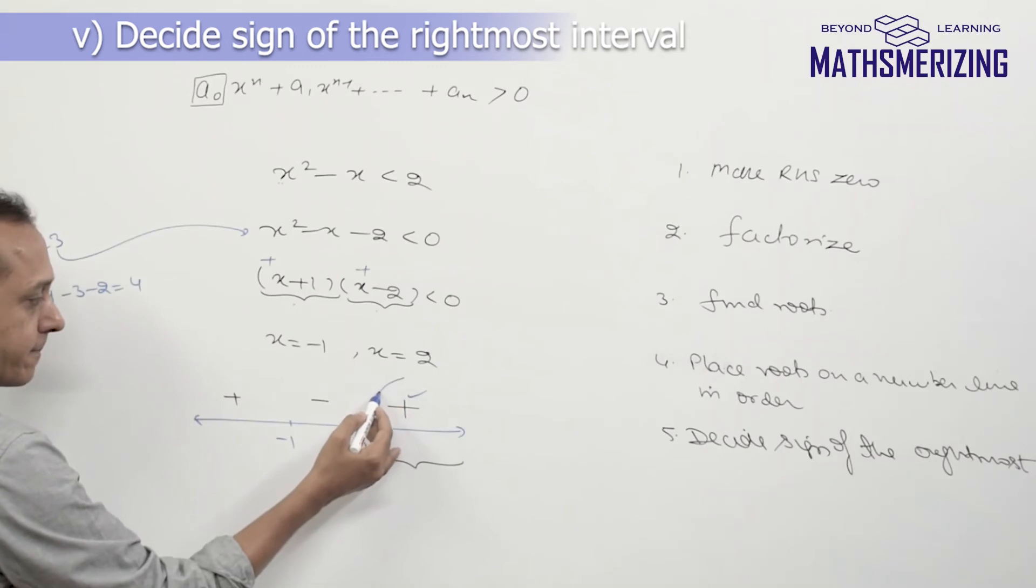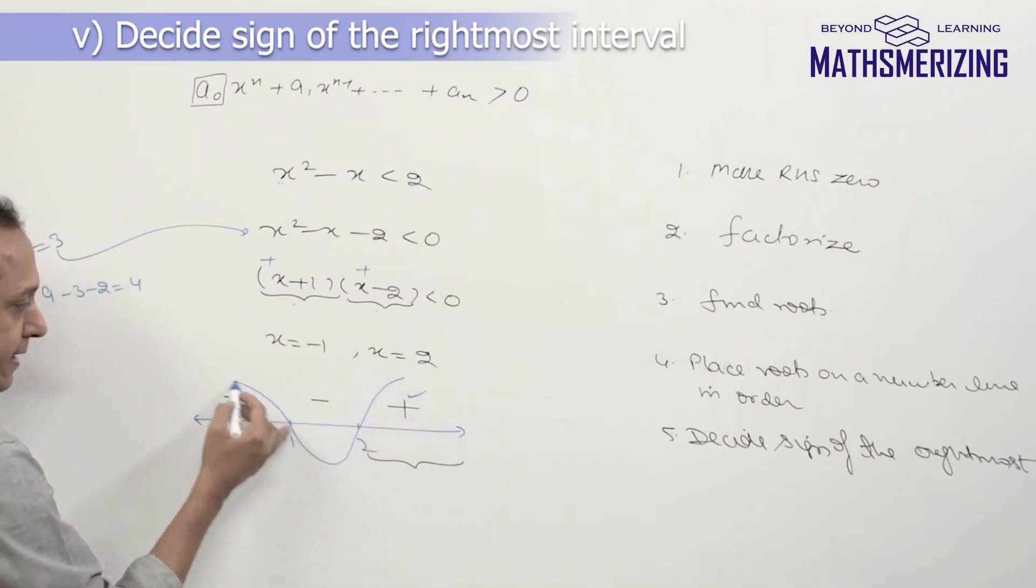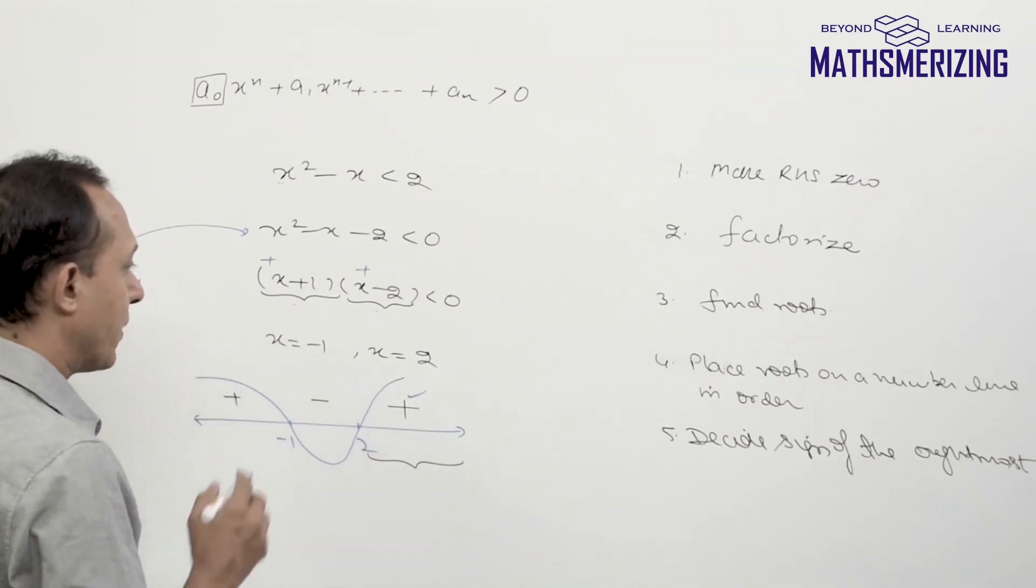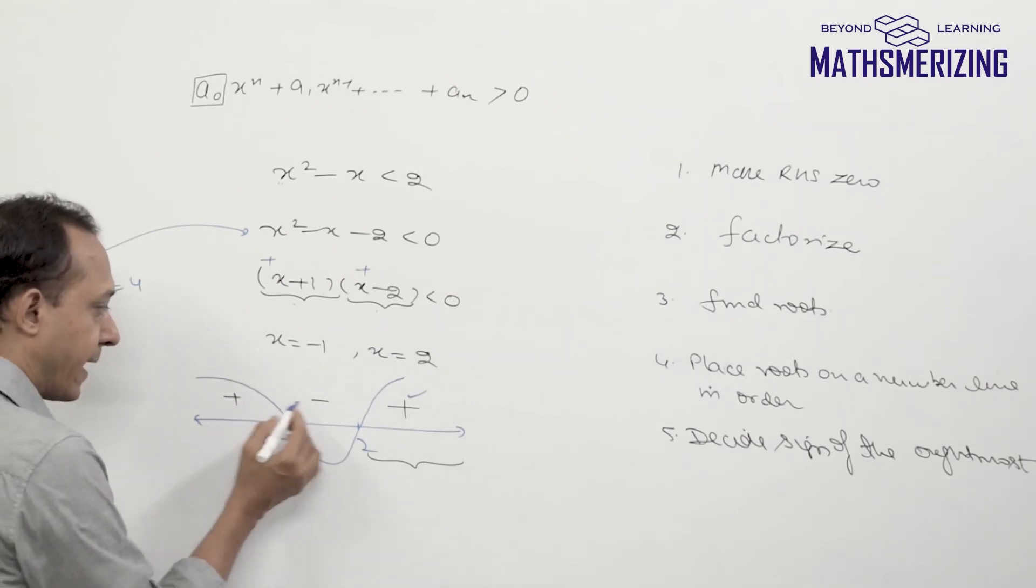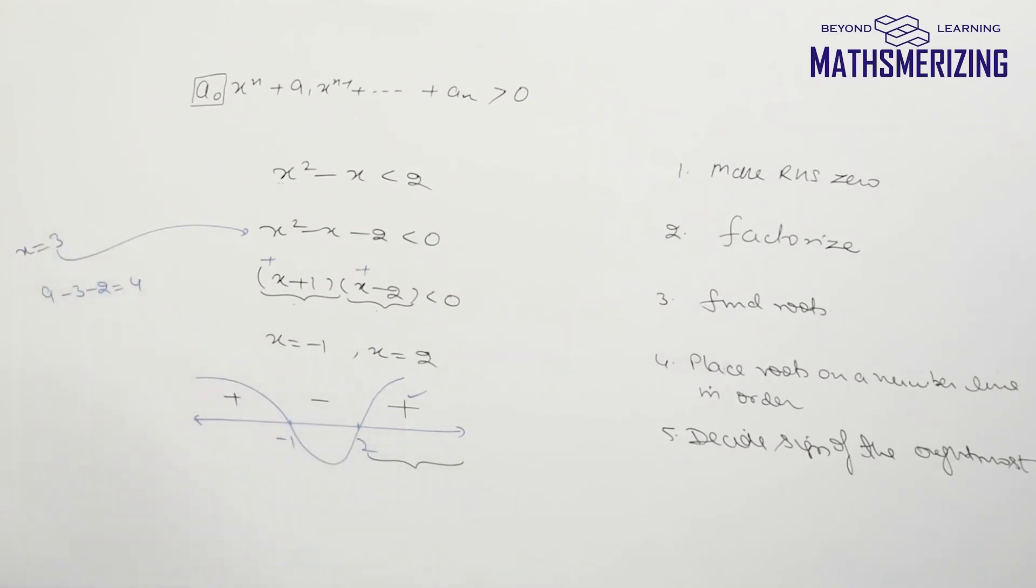From plus, minus, and plus, now the final step is I need to write the answer. Now what do these plus and minus signs actually represent? They represent that when x is less than -1 or x is greater than 2, the value of this expression is positive which is greater than 0. And when the value of x lies between -1 and 2, then the value of the expression is negative.